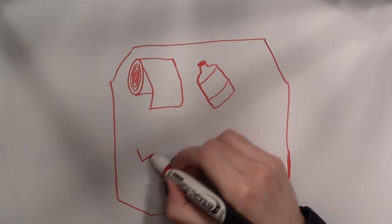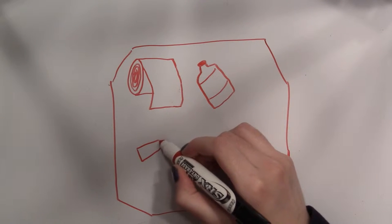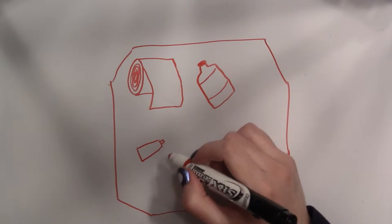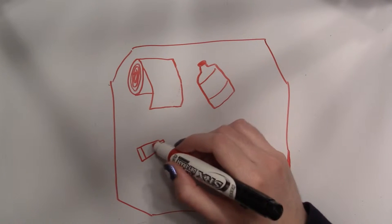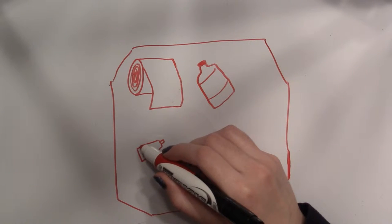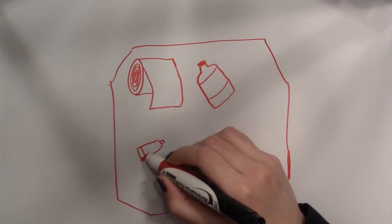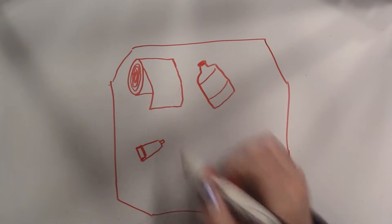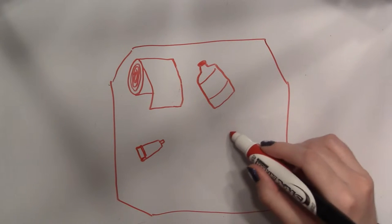We've got some ACE bandages. Okay, so if you sprain your ankle, you can fix that up maybe temporarily. We've got some sort of medicine there that'll maybe make you feel better for a little while. Some ointment, possibly Neosporin. It's good for cuts and scrapes.